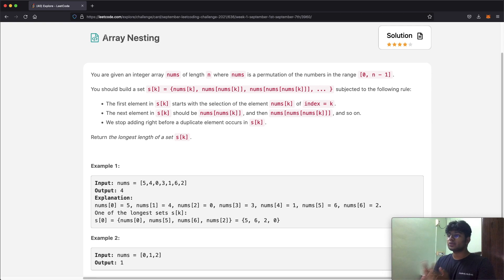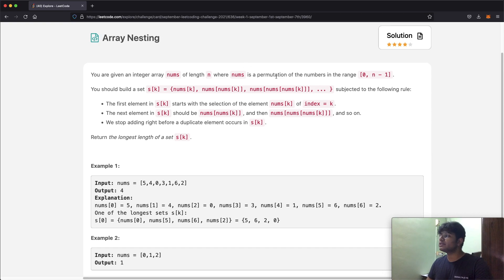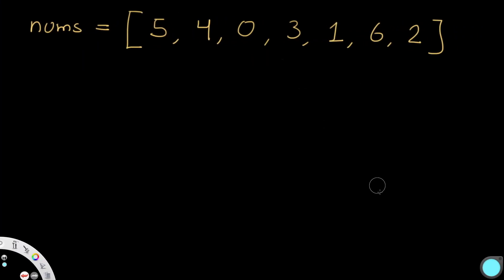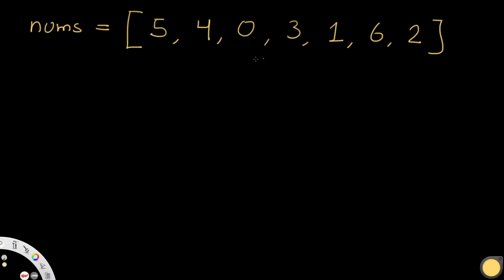This question gives us an integer array nums of length n, where nums is a permutation of numbers in the range 0 to n minus 1. So for example, if we're given these nums and the length is 7, the range of numbers is going to be from 0 to 7 minus 1, which is 6. And obviously 0 and 6 are inclusive in the range.